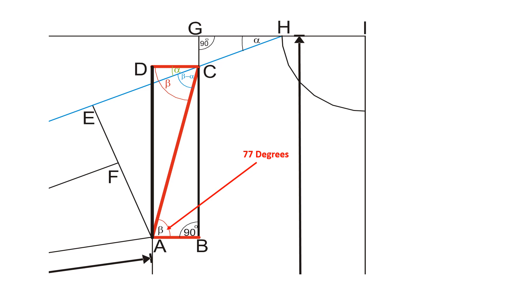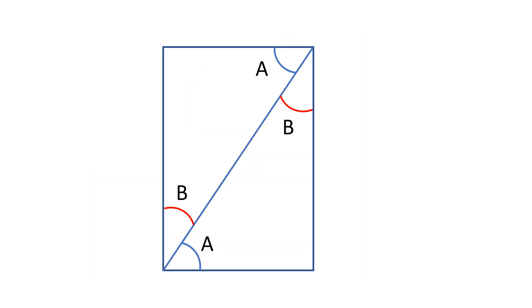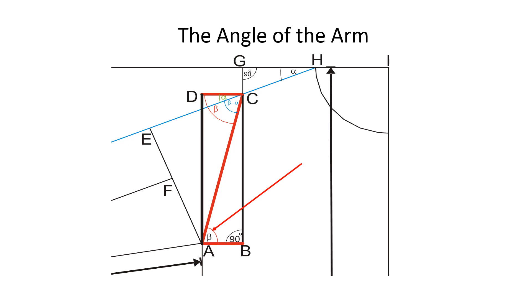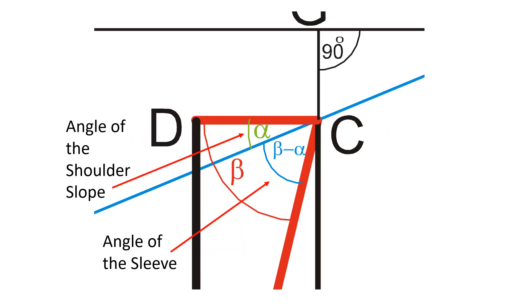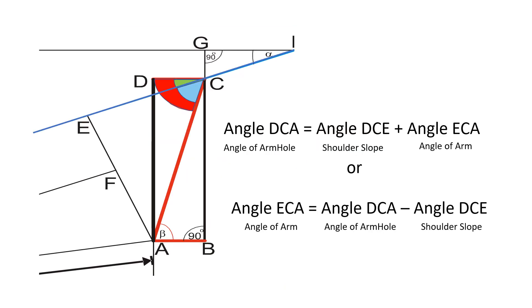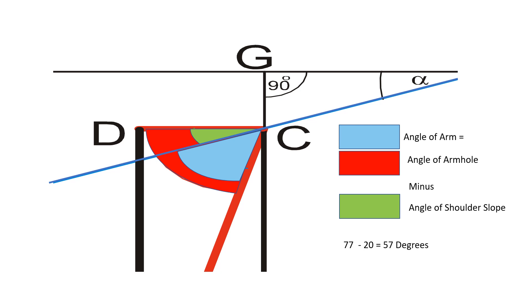Once we know the angle of the armhole, calculating the angle of the sleeve is straightforward. If we divide a rectangle into two parts diagonally, as shown in the illustration, the angles between CAB and DCA are always equal to each other. Looking at the illustration more closely, we can see that the angle of the armhole is the sum of the angle of the shoulder slope and the angle of the arm. In other words, the angle of the arm equals the angle of the armhole minus the angle of the shoulder. Therefore, the angle of the arm will be equal to 77 minus 20, that is 57 degrees.